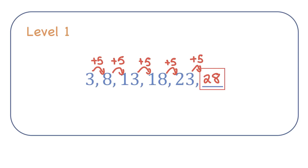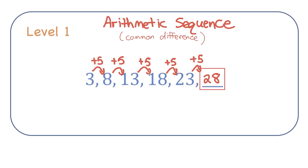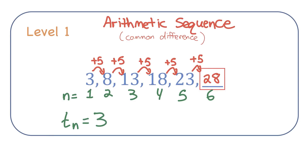This type of sequence where there's a common difference between terms is called an arithmetic sequence. If I number these terms, the formula for an arithmetic sequence looks like this: 3 is the first term, 8 is the second term, and so on. To get any term value in an arithmetic sequence, you just take your first term — in this case 3 — and add the common difference of 5, n minus 1 times. We could even sub 6 in for n and see that it equals 28.